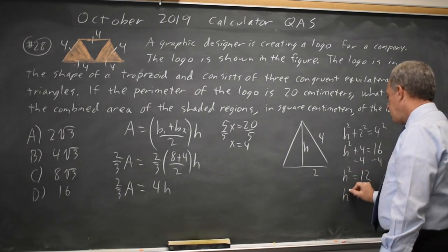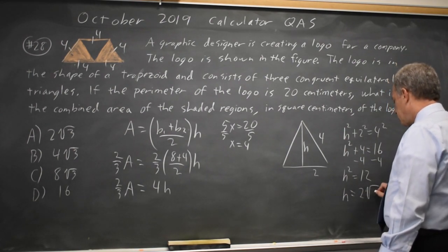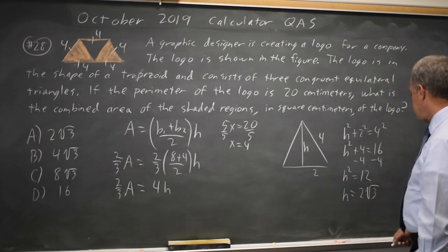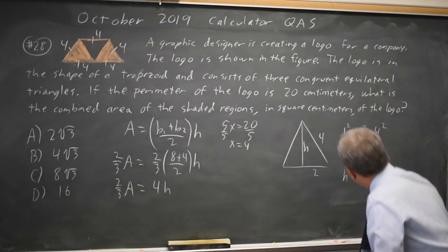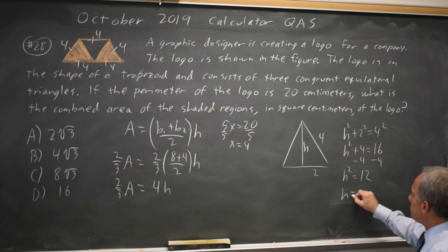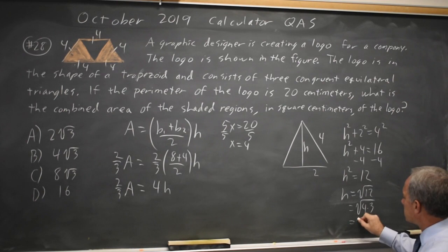So h equals root 12, which is 2 root 3. I should write that step. h equals root 12, which is root 4 times 3, which is square root of 4, square root of 3, which is 2 root 3.